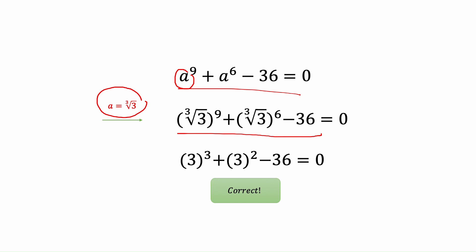Now cube root of 3 to the power 9 is going to be 9 divided by 3, which is going to be 3. And for this one is 6 divided by 3 is going to be 2 and minus 36 equals to 0, which is correct. So we have 27 and this is 9 minus 36 equals to 0.